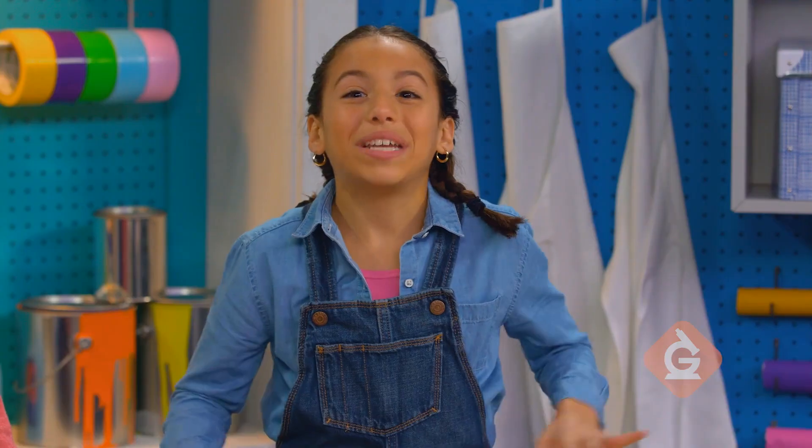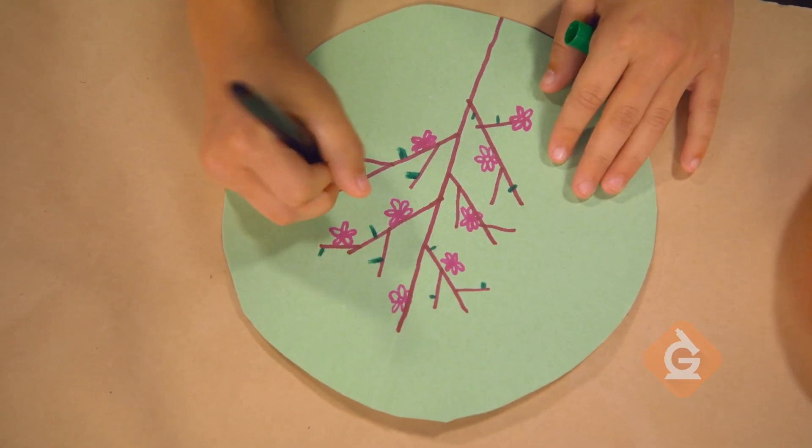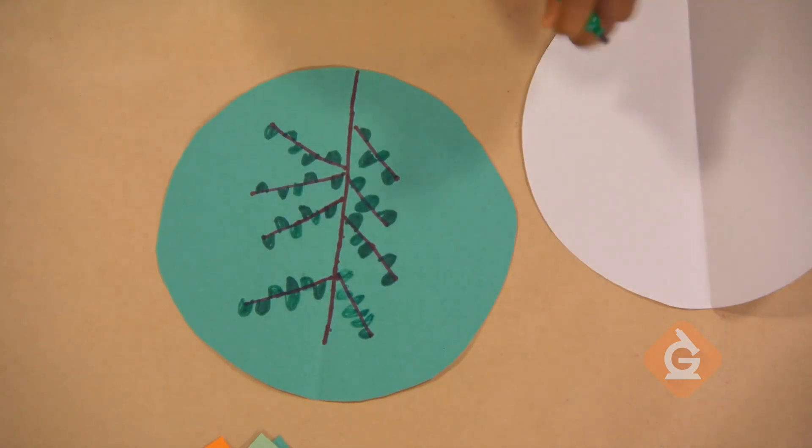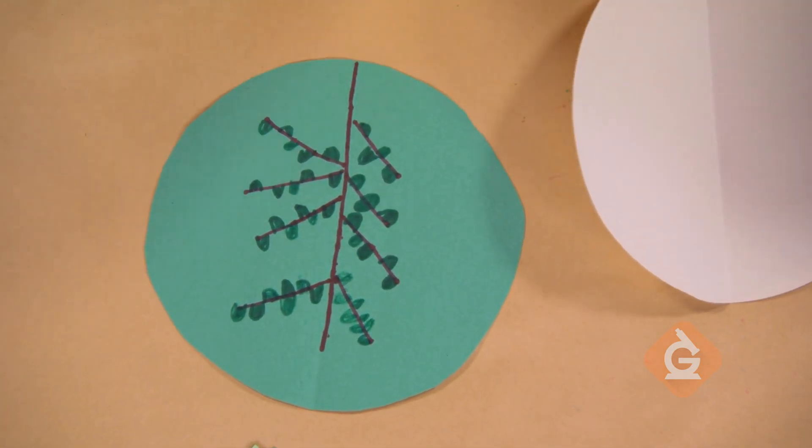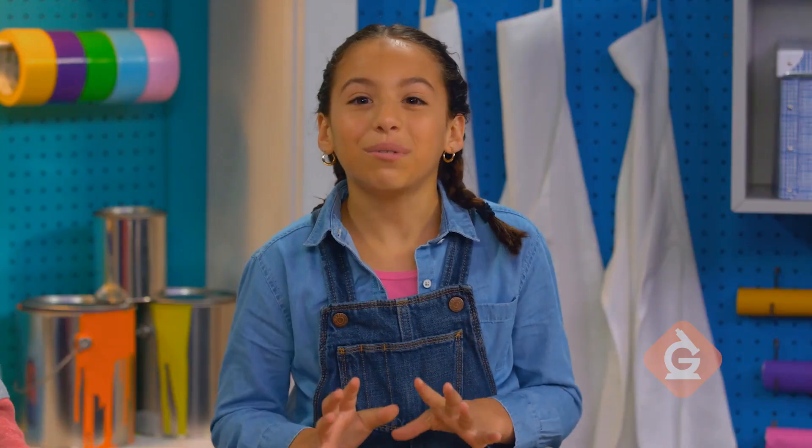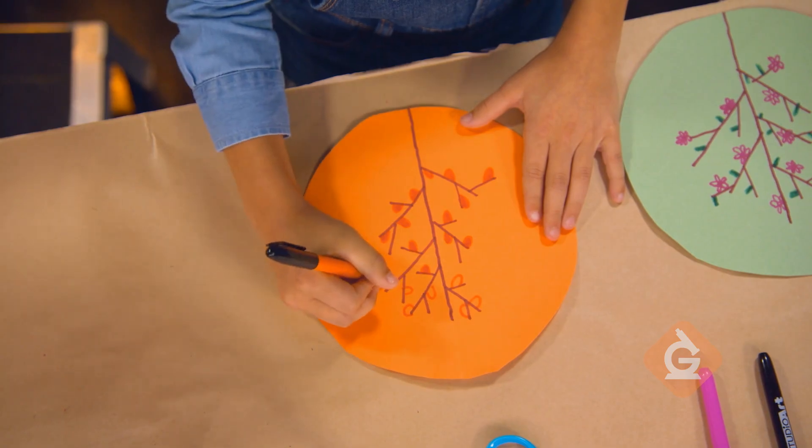Light green will be spring, when the leaves start growing back and when plants grow flowers. Dark green will be summer, when lots of trees are green with leaves. Orange will be fall, when leaves change color and fall off.